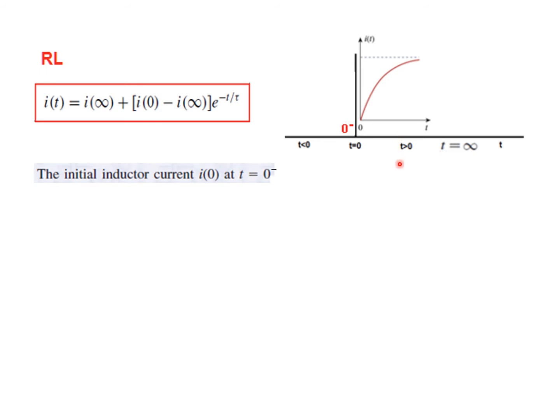Then this is t greater than 0 and this is t much greater than 0. Now the circuit in this region for t less than 0 is in a steady state condition, and so the inductor is considered to be a short circuit.